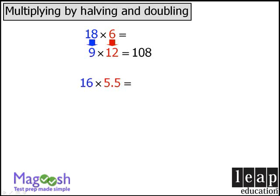Let's check another example. Here we can create a simpler product by taking our 16 and halving it to get 8, and taking our 5.5 and doubling it to get 11. Here we see that our product must be 88.